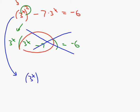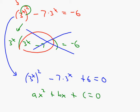Going back: (3 to the x) squared minus 7 times 3 to the x plus 6 equals 0. This equation is actually in the form of a quadratic: a x squared plus bx plus c equals 0. Instead of x being squared, we have 3 to the x being squared; instead of b times x, we have b times 3 to the x. So x has been replaced with 3 to the x, but it's still really a quadratic equation.